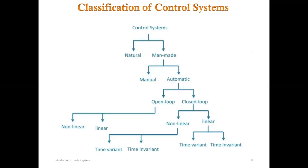A classification graph summarizes: control systems are divided into natural, man-made, manual, and automatic. Automatic systems include open loop and closed loop, each of which can be linear or non-linear, and further classified as time variant or time invariant. Open loop and closed loop systems will be studied in the next lecture. In summary, we have studied the introduction to control systems, their classification, and applications.